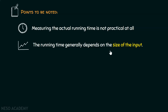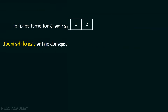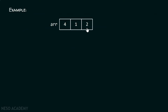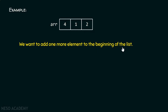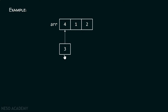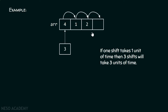Why am I saying this? Let's see with the help of an example. Suppose we have an array which consists of three elements. I want to add one more element to the beginning of the list. For this purpose, I must have an empty slot here, and I need to make three shifts. If one shift takes one unit of time, then three shifts will take three units of time. I need to shift each element towards right in order to make an empty slot.